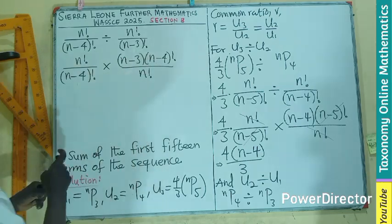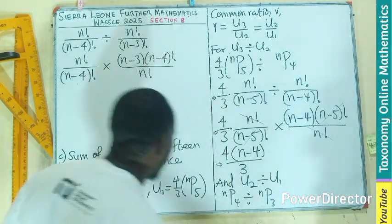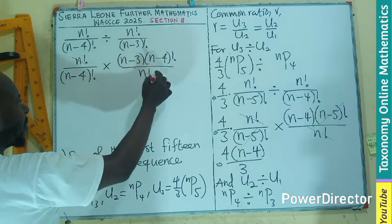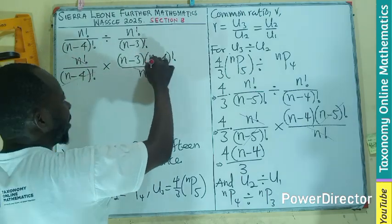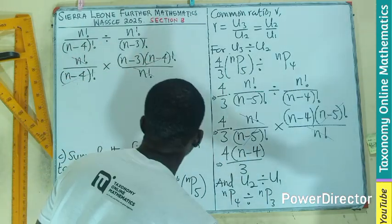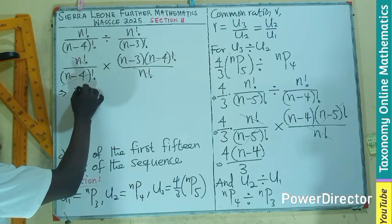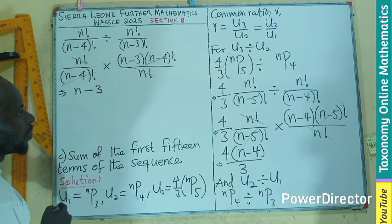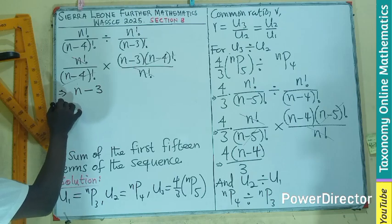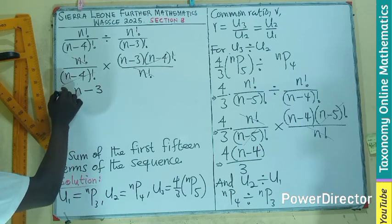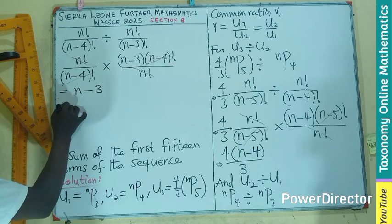By cancellation, I can cancel this and this, this, this, and this. So I am left with only n minus 3. Let me just say equals to, so that I will not use two implies here.